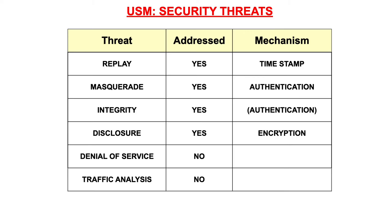The threat that messages get disclosed to others is addressed via encryption algorithms. The algorithm initially specified was DES, but later better encryption algorithms appeared, such as triple DES and AES. No protection is provided against denial-of-service and traffic analysis attacks. Denial-of-service attacks target the manager or agent to make them unresponsive. In practice, such attacks hardly take place, although SNMP agents are sometimes misused in amplification attacks against other systems.